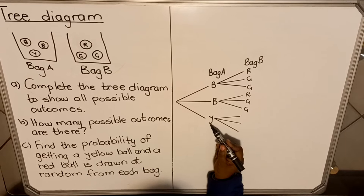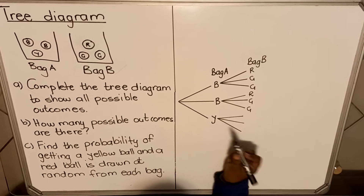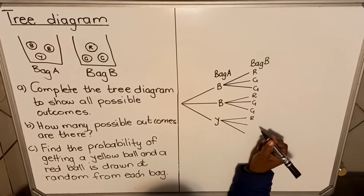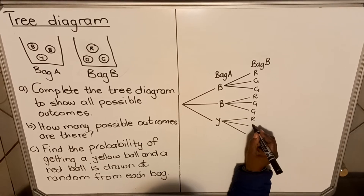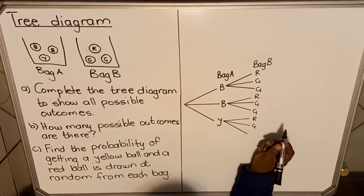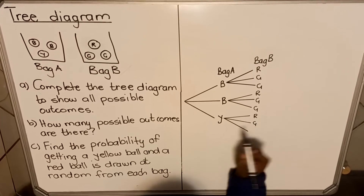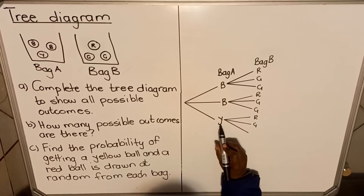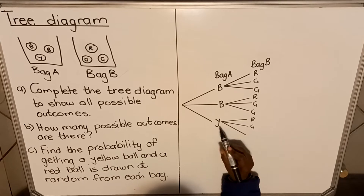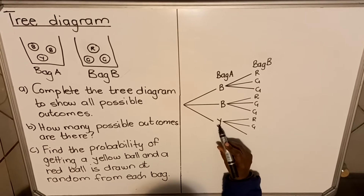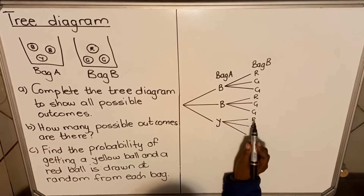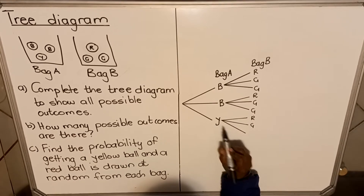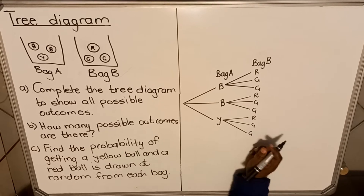If you took out the yellow ball first, you could take out the red one as the second ball, or you could take out the green one as the second ball — so yellow then green. Or you could have yellow then green again. So the yellow branch also has three options from Bag B: red, green, or green.